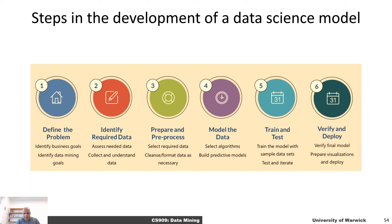If we have a data science problem — let's say we want to predict who painted a particular picture — the first step is to identify that particular problem, and then we need to identify what sort of data we would need. In this example of identifying artists, we would need paintings by different artists, digitize those paintings and transfer them into the computer. We'll need to identify and acquire all of that data, which is the second step.